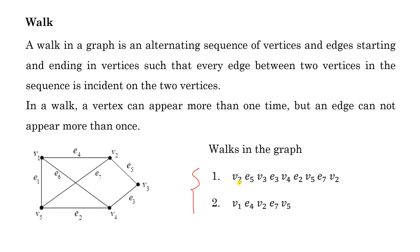Here are some examples of walks in the graph. Starting with v2: v2, e5, v3, e3, v4, e2, v5, e7, v2 — this is a closed walk because the first vertex is the same as the last vertex. Another example: v1, e4, v2, e7, v5 — the first vertex is different from the last vertex, so this is an open walk. You can extend this further, for example adding e4, v1 to get another walk.